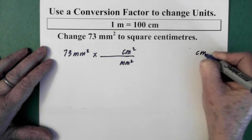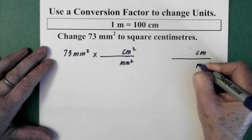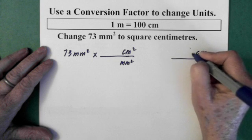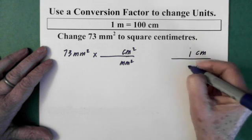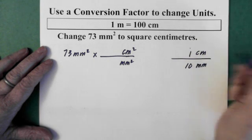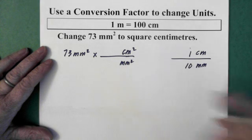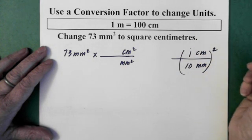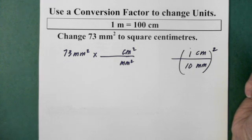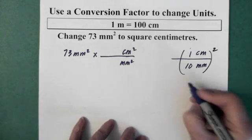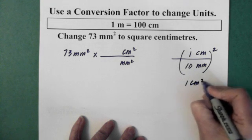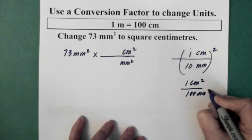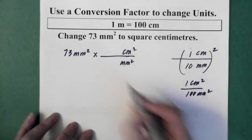We have centimeters over millimeters. The larger one is centimeters. So, I say 1 centimeter is 10 millimeters. Now, I want the whole thing squared. So, I square it. And I'm left with 1 centimeter squared over 100 millimeters squared.